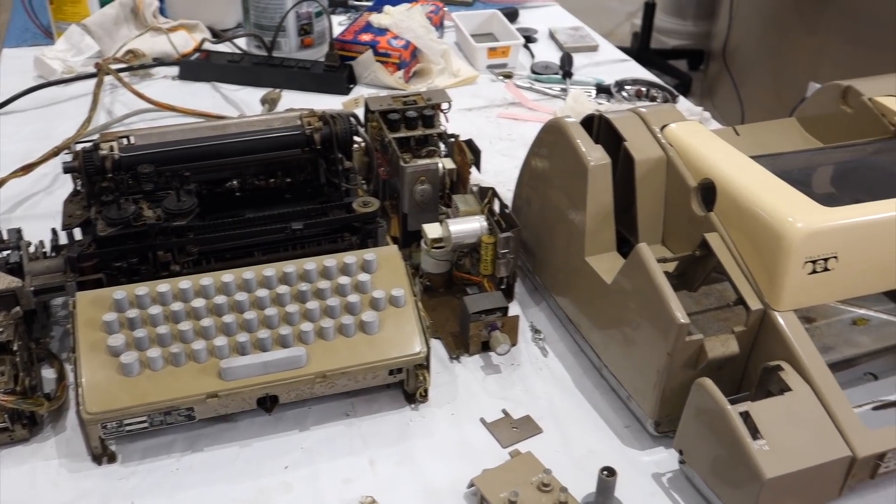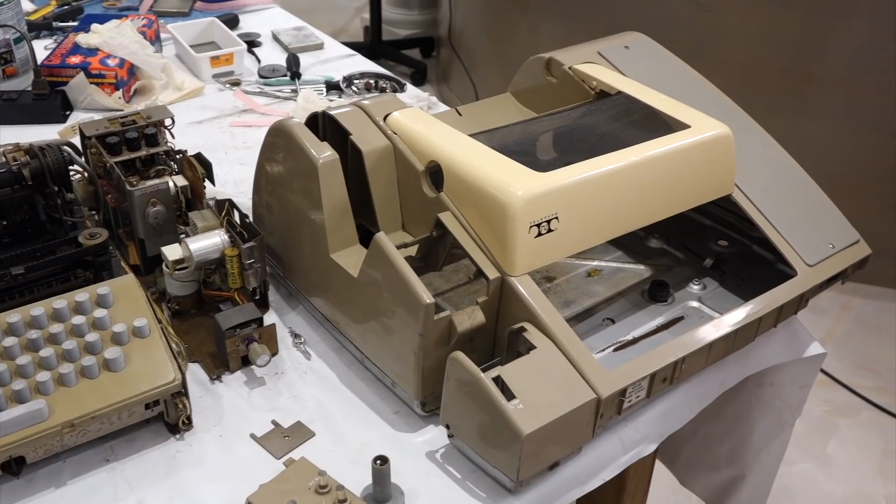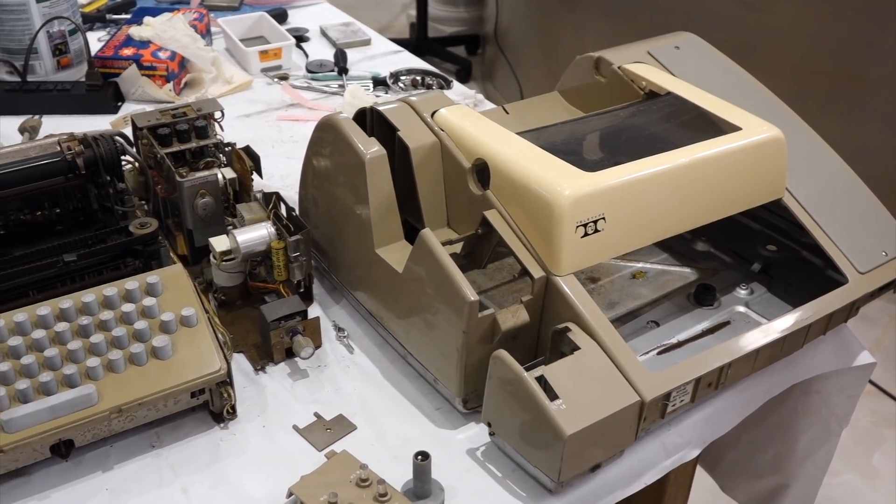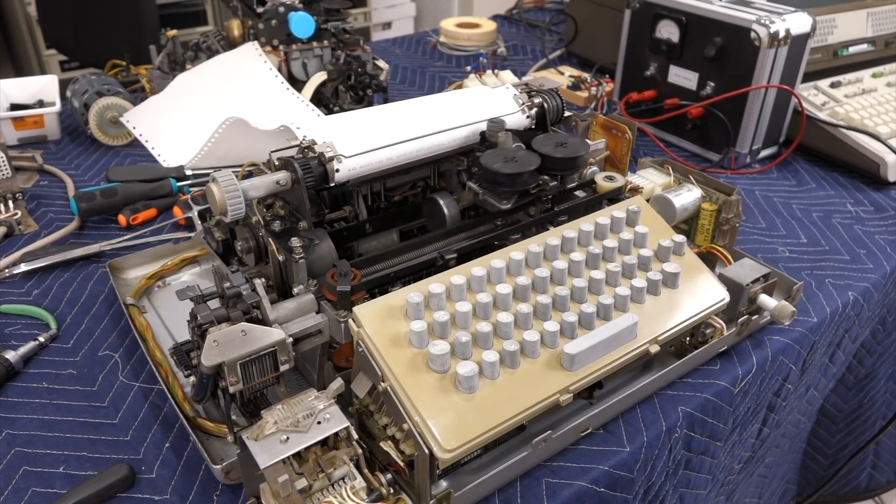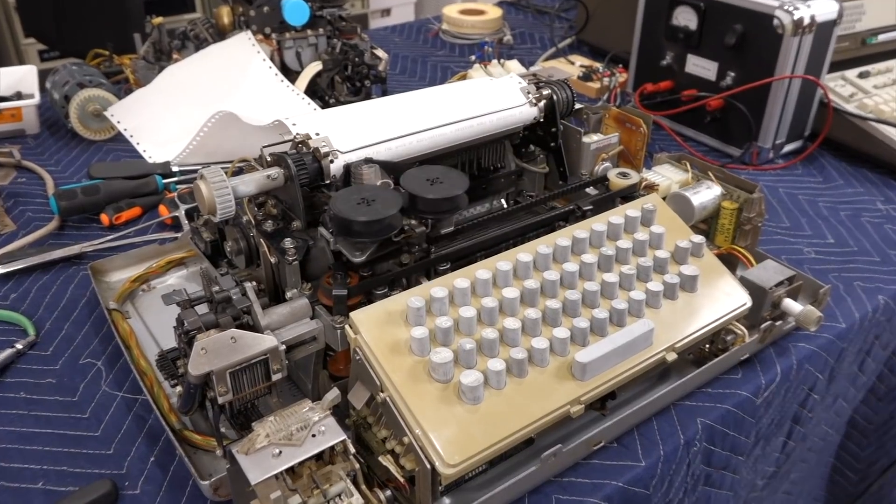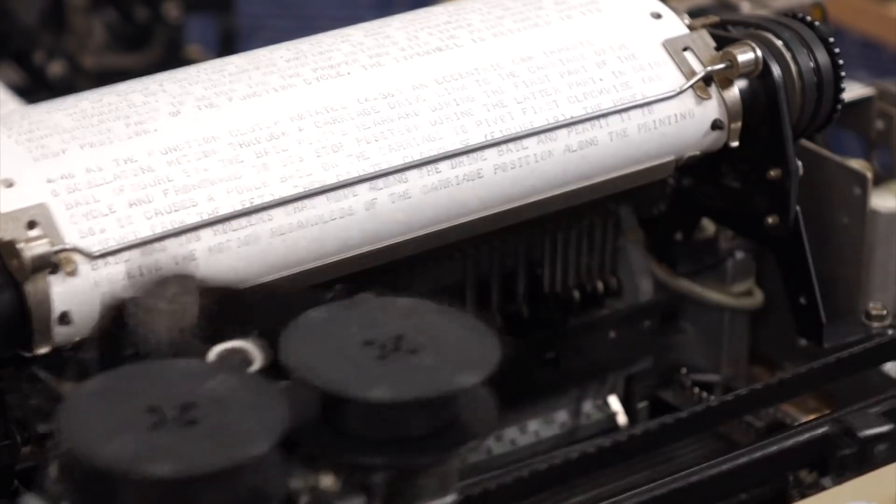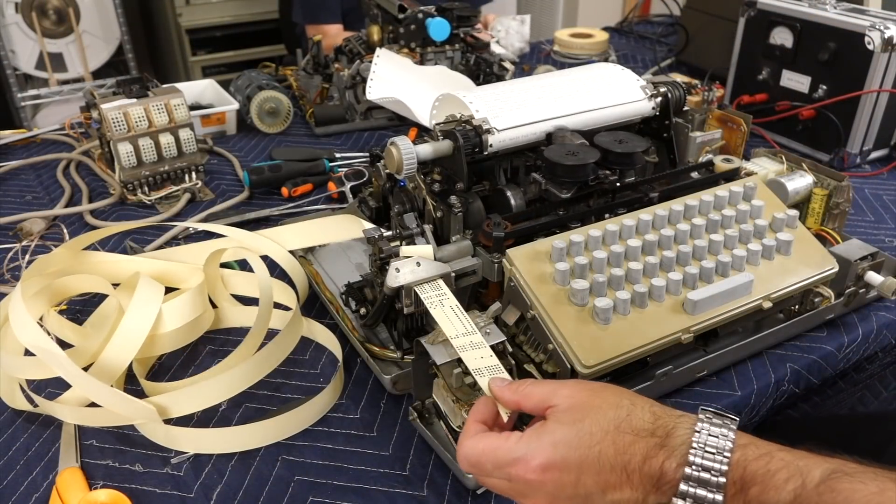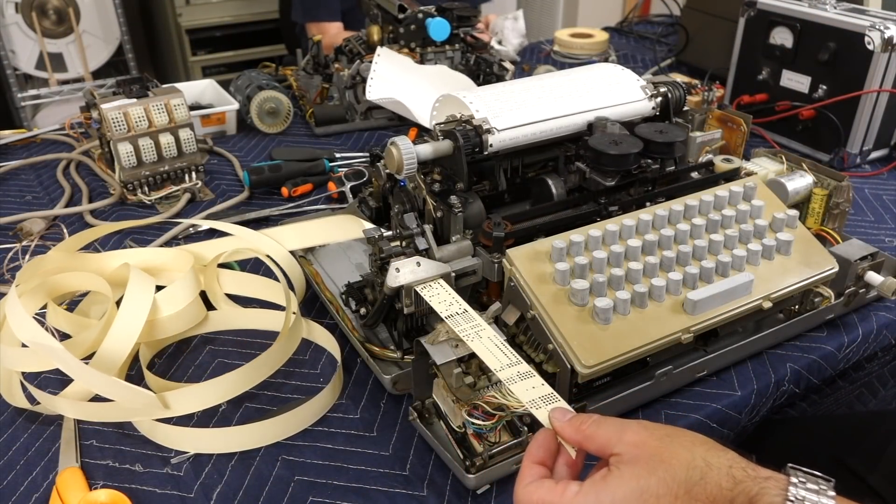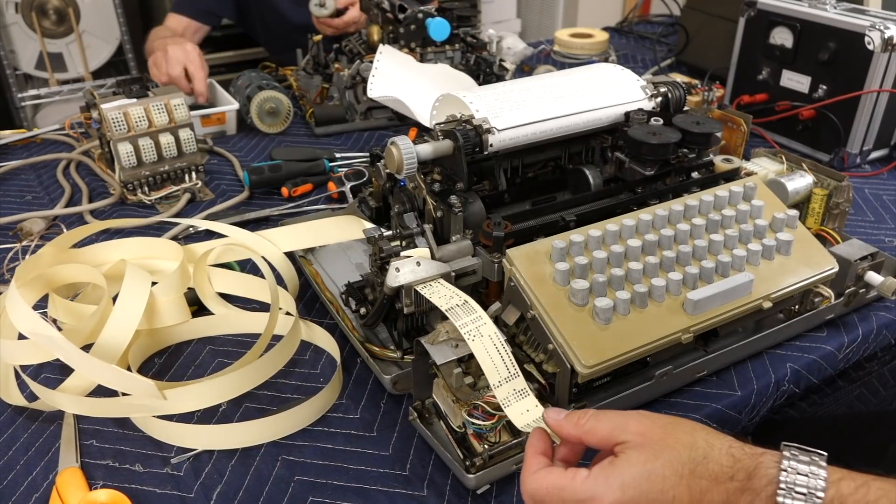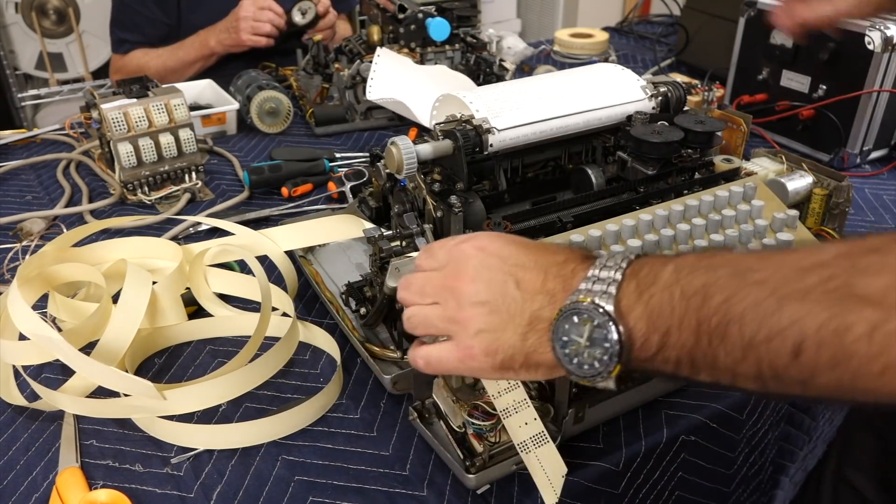Welcome back, we are continuing the restoration of our 8-bit ASR33 teletype. In the previous episode, we fixed the last remaining carriage return bugs and got error-free reliable receive operation. It's now time to pay attention to the paper tape section of the machine, which includes the punch and the reader.